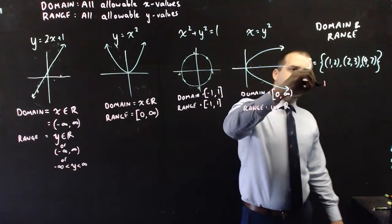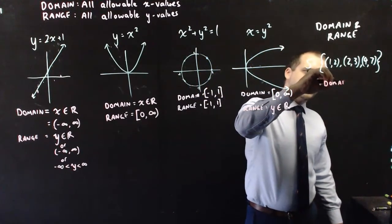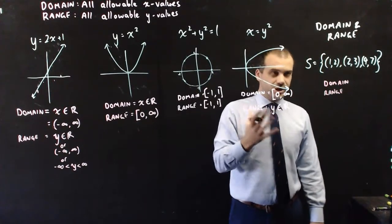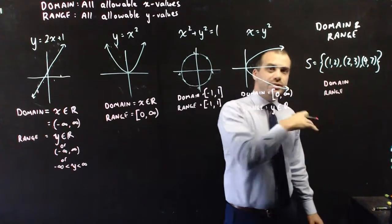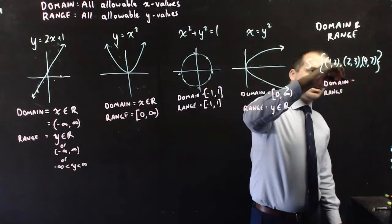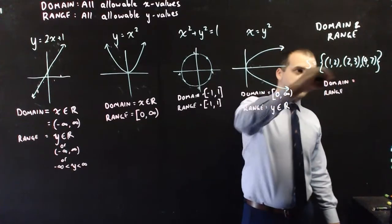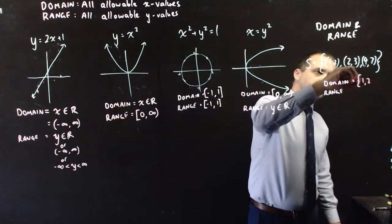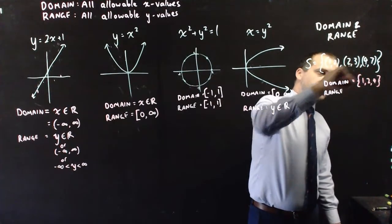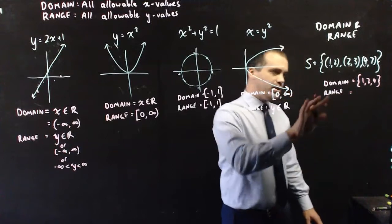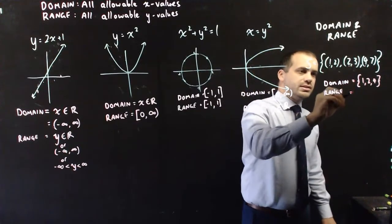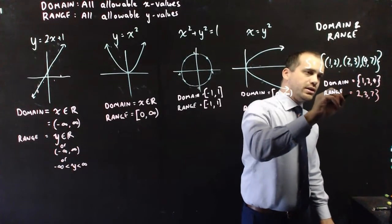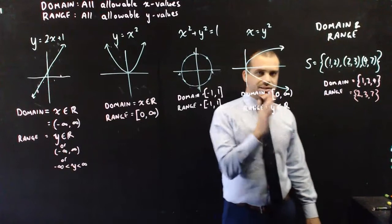This last one here — people get tricked up by this. A domain can also just be a list. These are only three points and that's it. So the domain here is literally just a list: 1, 2, and 4. Those are the only x values it can take. And the range is 2, 3, and 7 — those are the only y values this can take.